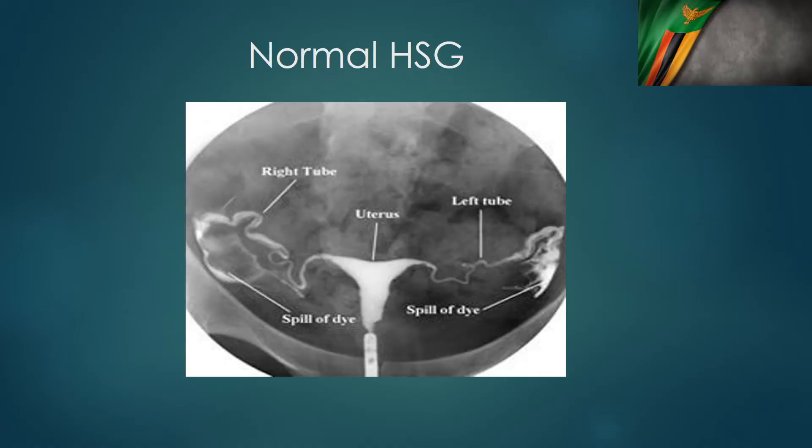This is a normal HSG where we can see the uterus is clearly visible, the tubes are thin and clearly visible, and we can see the spill of the dye on both sides. An important reminder: when we see a spill, we need to remember that what we are measuring is tubal patency and not tubal function per se.